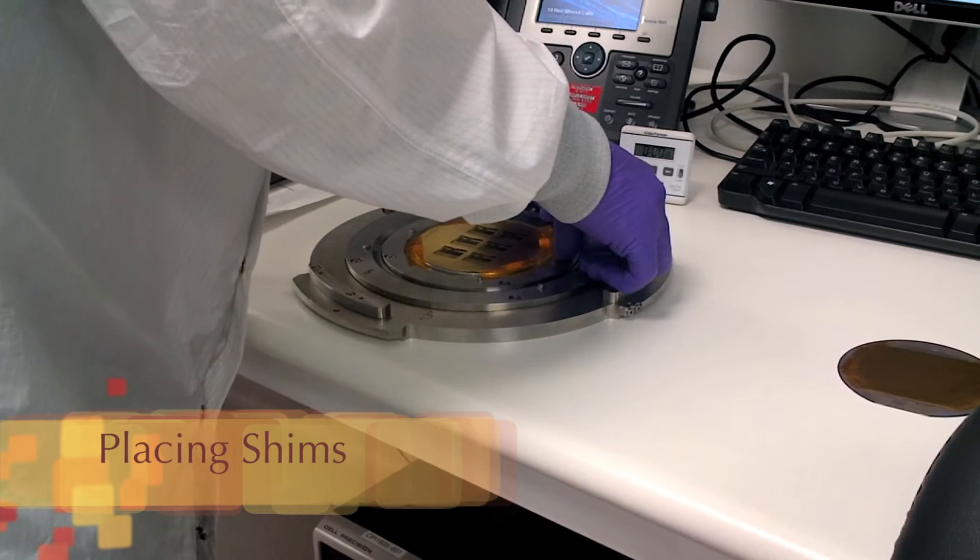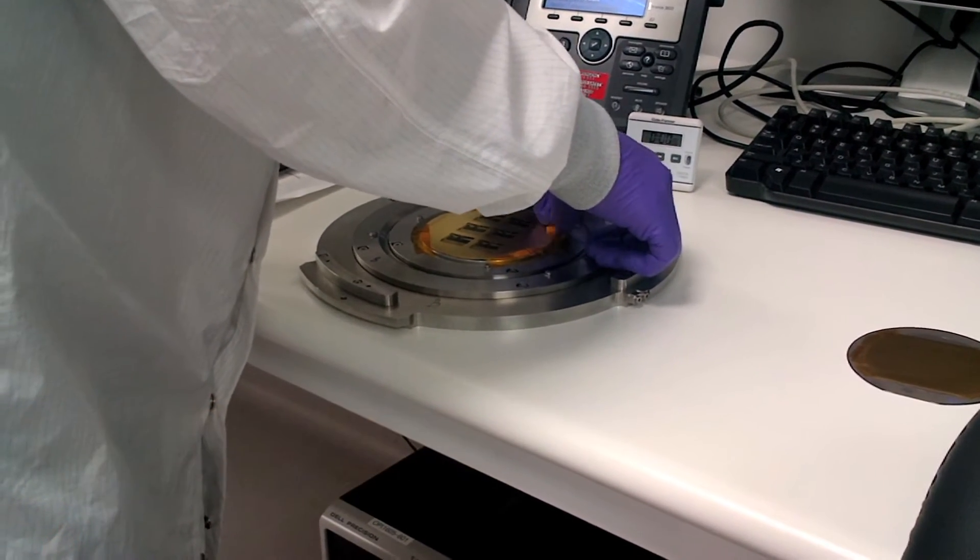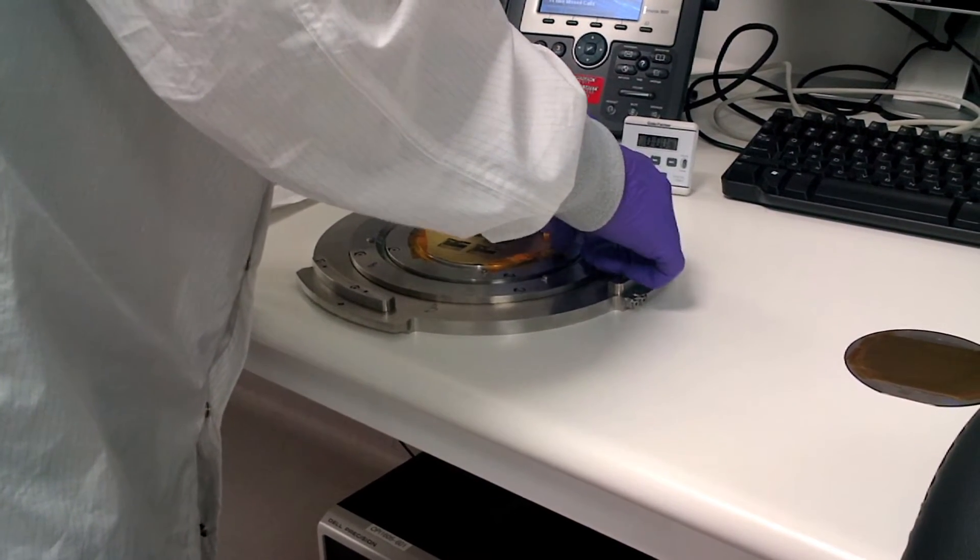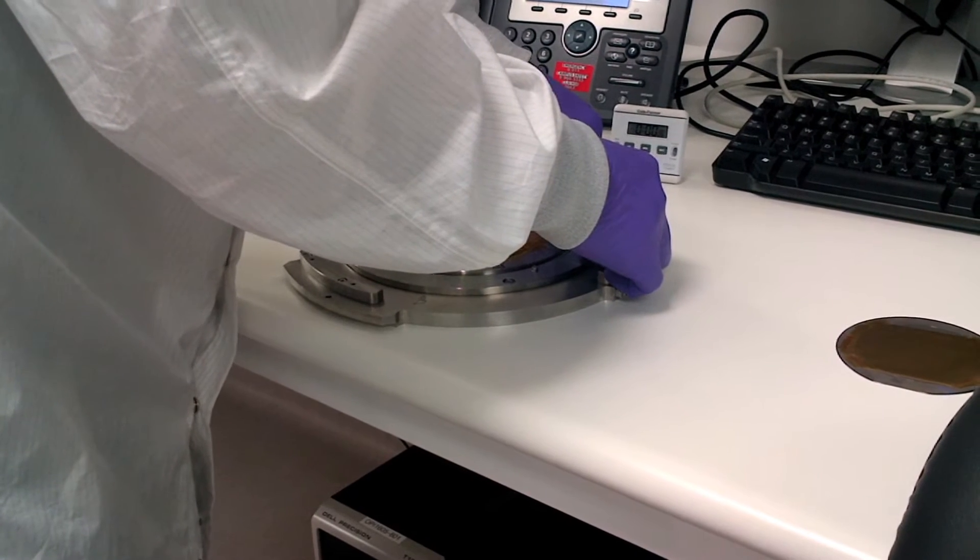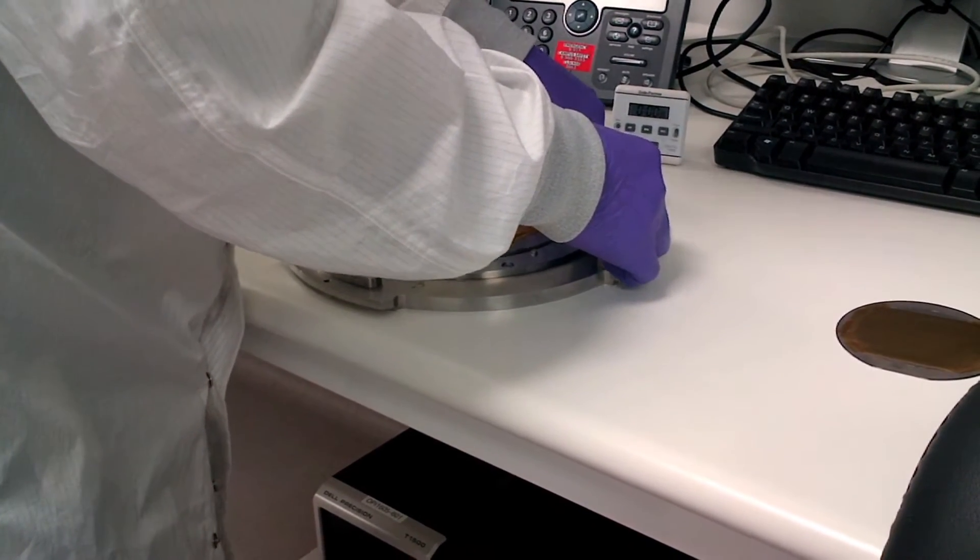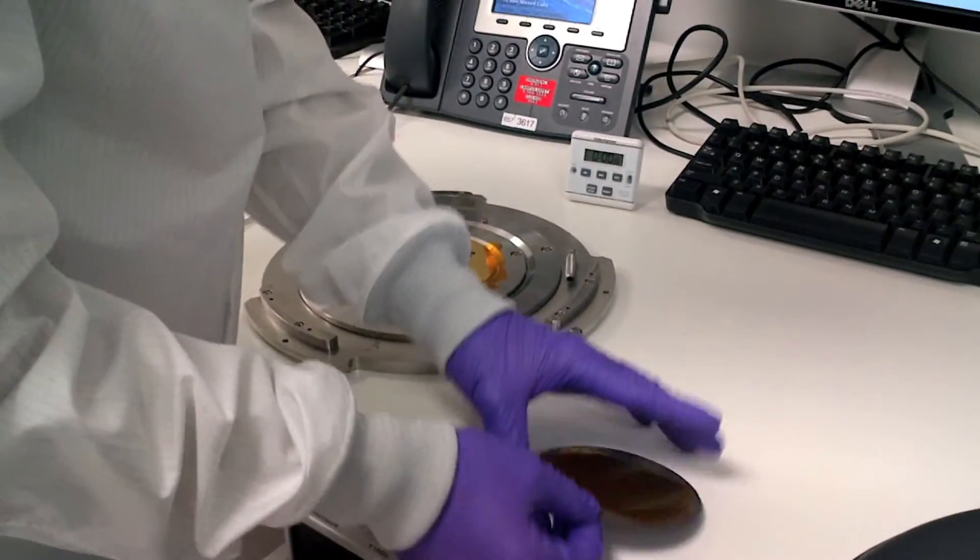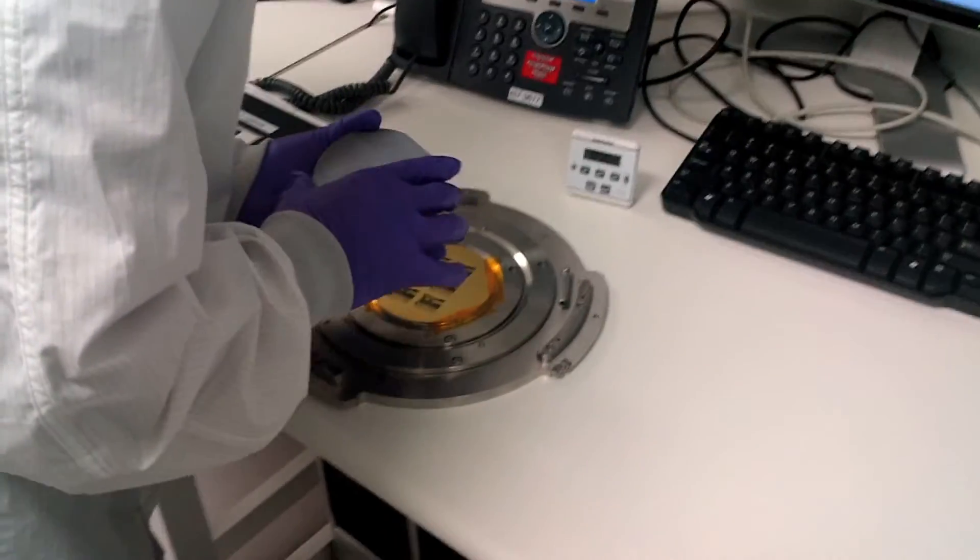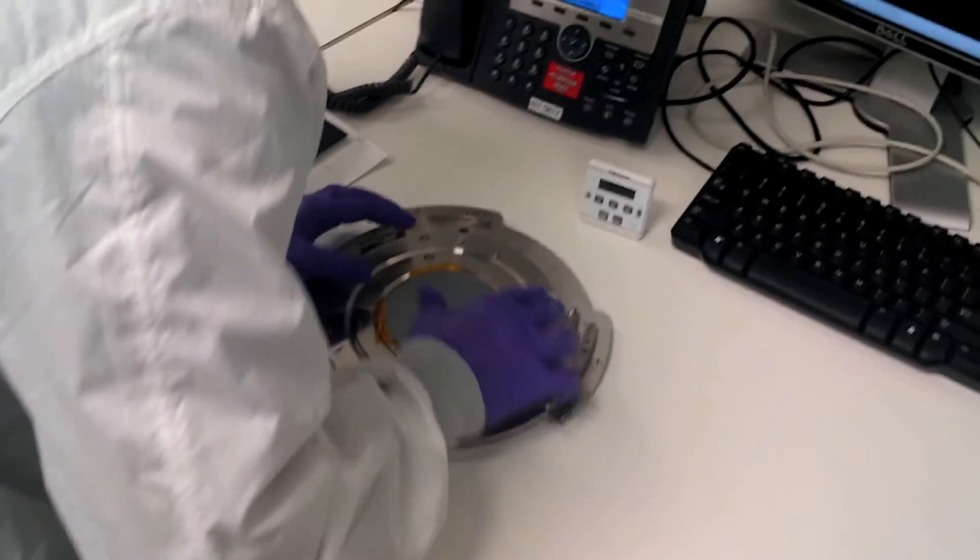Shims of precise thickness are then placed on the sample at predetermined locations to introduce a small proximity between the mask and the polymer surface. Typical proximity gaps range from 100 micrometers for micron-sized features to up to 1 millimeter for large millimeter-sized features.